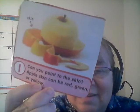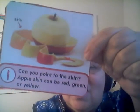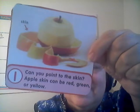Now let's see, how can we describe an apple? If you point to the apple, what do you see first? Can you point to the skin? This part right here is the skin. Apple skin can be red, green, or yellow. What color is this one? It's red. Good job.